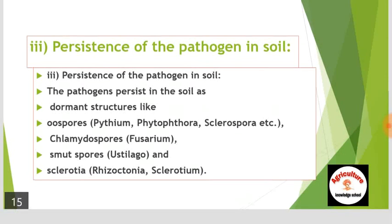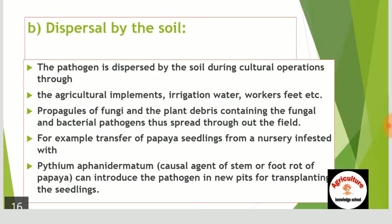The pathogen persists in the soil as dormant structures like oospores made by Pythium, Phytophthora, Sclerospora etc., chlamydospores by Fusarium, smut spores by Ustilago, and sclerotia by Rhizoctonia and Sclerotium. Dispersal by soil: the pathogen is dispersed by soil during cultural operations through agricultural implements, irrigation water, workers' feet etc. Propagules of fungi and plant debris containing fungal and bacterial pathogens thus spread throughout the field. For example, transfer of papaya seedlings from a nursery infested with Pythium aphanidermatum can introduce the pathogen into new pits for transplanting the seedlings.